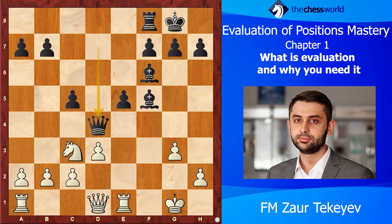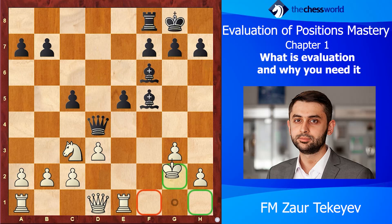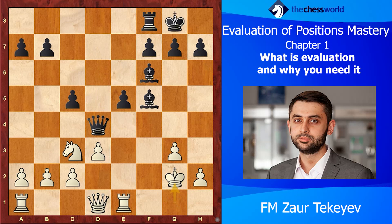Here we have a game played between two famous British grandmasters. With White we have Stewart Conquest, and with Black the very famous author and grandmaster John Nunn. Conquest played King g2 because the king was under check. Now it's Black to move, and I'd like you to pause the video and try to find the right continuation for Black before we discuss it.